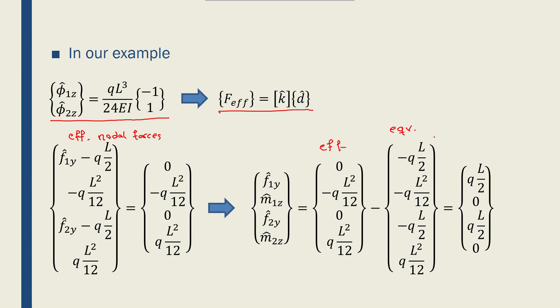This is something that we found earlier, and this is something that we found from solving for the problem. And if I subtract this, 0 minus minus QL over 2 gives me QL over 2 for f1y. And minus QL squared over 12 minus minus QL squared over 12 gives me 0 for m1z.